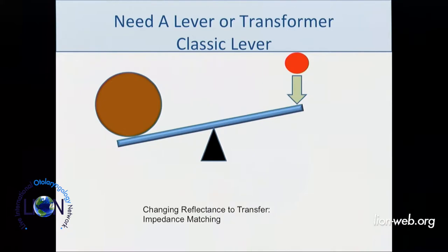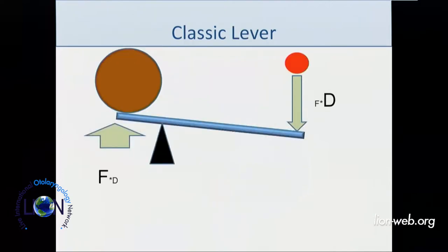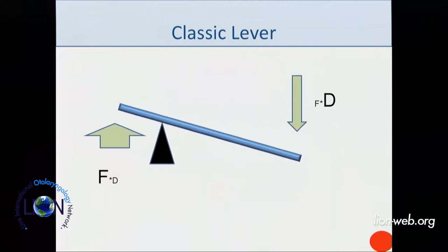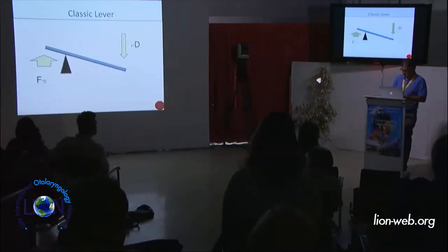Classically, when we try to drive a load with a small driving force, we can't do it because it bounces off. So the air just reflects off the cochlea. We want to make some kind of lever by changing the fulcrum so that when we try to drive this load, we give something up — we give up distance. It moves a smaller distance, but with higher force. That's classically what the middle ear is: an impedance-matching lever.